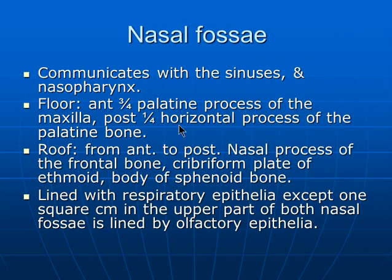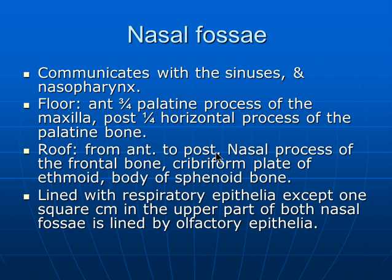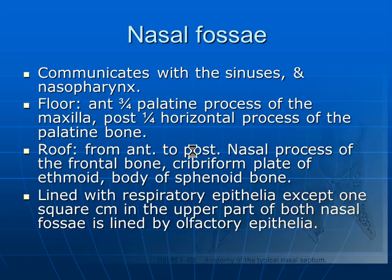The nasal cavity communicates with the sinuses and the nasopharynx. The floor is formed in its anterior three-quarters by the palatine process of the maxilla, while the posterior quarter is formed by the horizontal process of the palatine bone. The roof, from anterior to posterior, consists of the nasal process of the frontal bone, the cribriform plate, and the ethmoid.